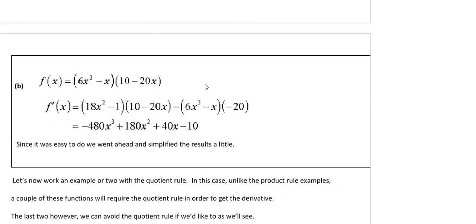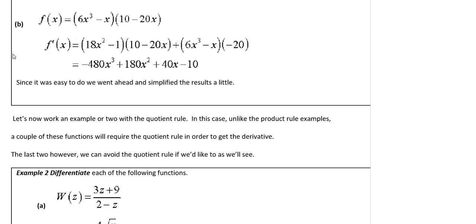For this next product example, let's call those two functions f and g and find (fg)'. The derivative of the first function is 18x squared minus 1 by the power rule, times the second as it is, plus the first as it is times the derivative of the second, which is minus 20. Then it's just simplification.